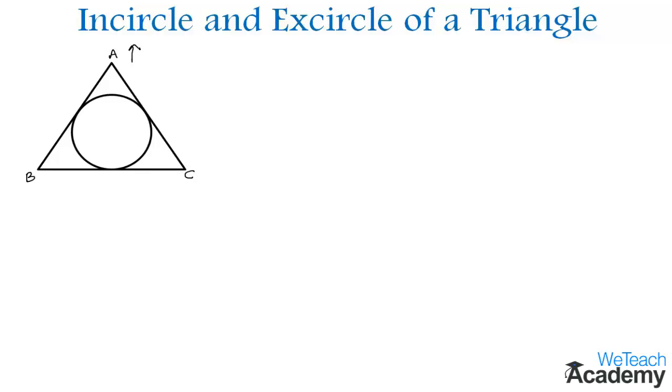The center of the incircle is denoted by I. In other words, we can also say that the point of intersection of the internal bisectors of the angles of a triangle is the incenter I of the triangle ABC.